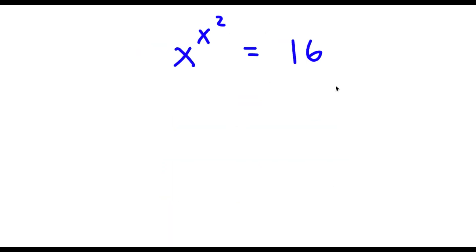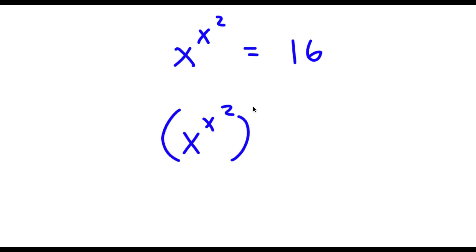So I have x to the power of x to the power of 2 is equal to 16. The first thing I'm going to do is take the power of 2 on both sides. So I have x to the power of x to the power of 2 to the power of 2 is equal to 16 to the power of 2.